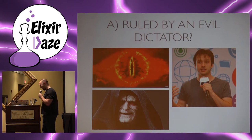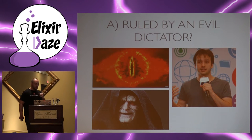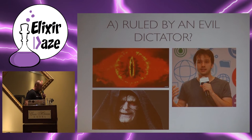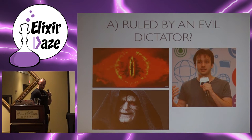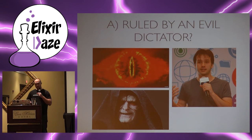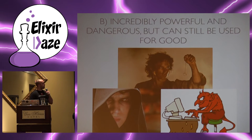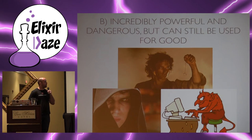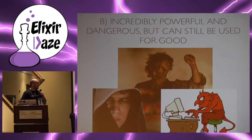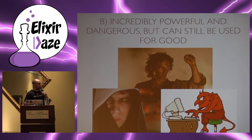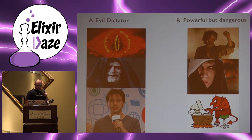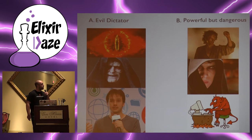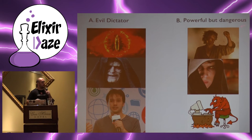Is it A — ruled by an evil dictator? We have some unsavory characters up here: Sauron, the Emperor, and Jose Molina. Or is it B — incredibly powerful and dangerous, but can still be used for good in the right hands? Also some unsavory characters up here, and this little devil cartoon character.